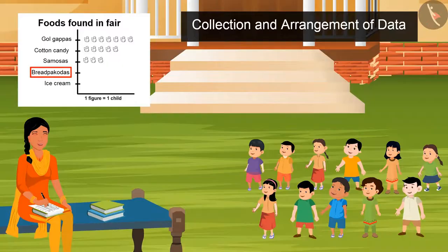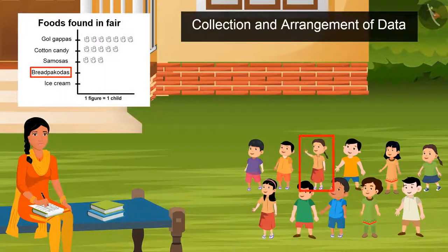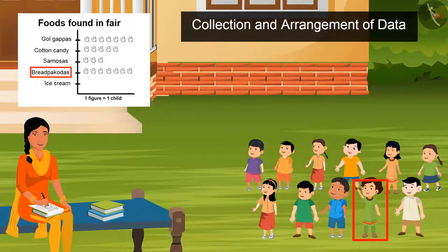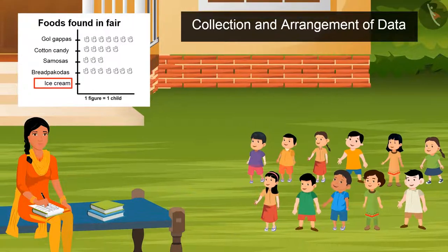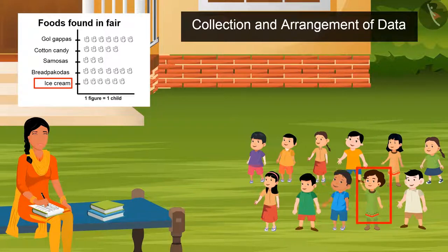Who all wants to eat bread pakoras? 1, 2, 3, 4, 5, 6 and 7. Who all wants to eat ice cream? 1, 2, 3, 4, 5, 6, 7 and 8.